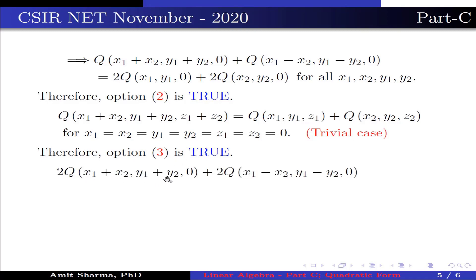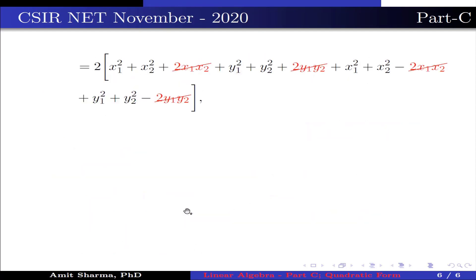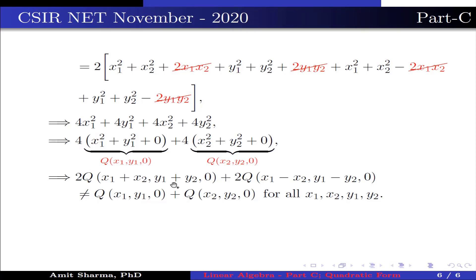Now 2·Q(x1+x2, y1+y2, 0) + 2·Q(x1−x2, y1−y2, 0) expands and after cancellation of cross terms 2x1x2 and 2y1y2, we get 4x1² + 4y1² + 4x2² + 4y2², which equals 4·Q(x1, y1, 0) + 4·Q(x2, y2, 0). This is not equal to Q(x1, y1, 0) + Q(x2, y2, 0) for all x1, x2, y1, y2. Therefore, Option 4 is false.